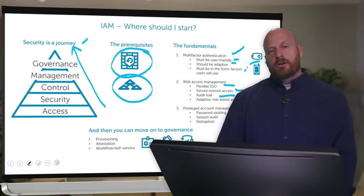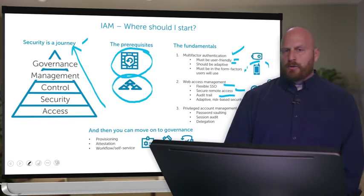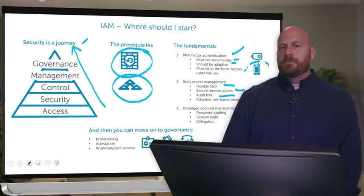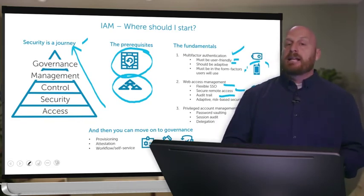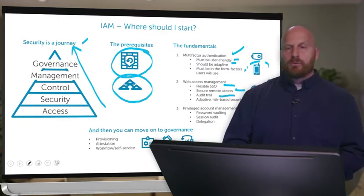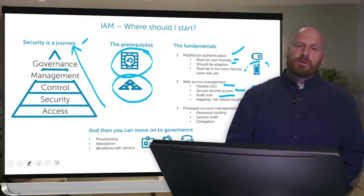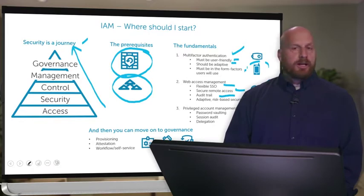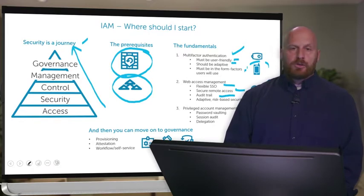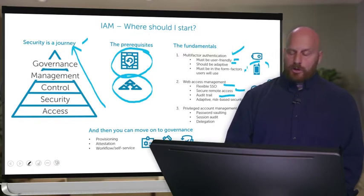The third area is privileged account management. Think about the administrative accounts that every system, every application, every network device — everything — has a privileged account. Those are the crown jewels that the bad guys are trying to get a hold of. You need a way to lock those down and make sure they don't fall into the wrong hands.